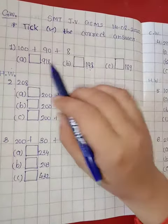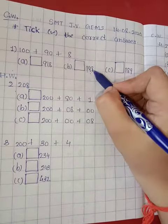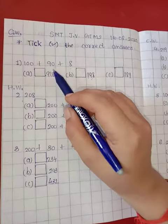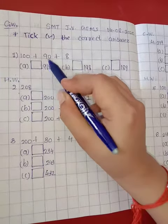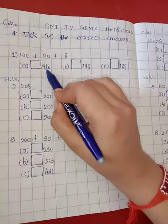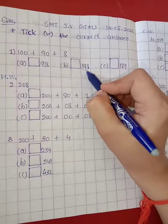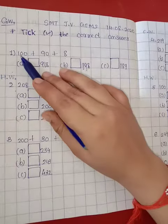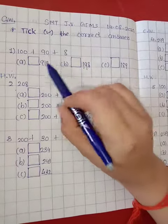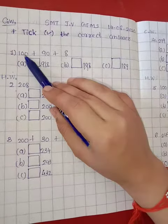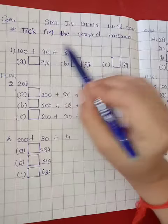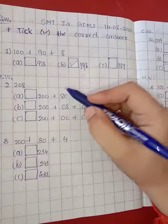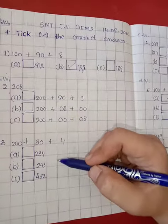Now see both options. Here is 8 and here is 8. Now see the tens place. Here is 9, tens 90. Find out where is the 9. Here 1 is on the tens place, so this one is not correct. Now here is 9. Yes. So 9 tens 90 and 100. This option is correct because 100, 9 tens 90, and 8 ones 8. So tick right here. By this way, the rest two are in homework.